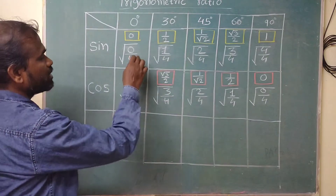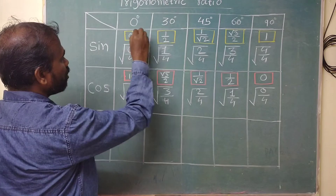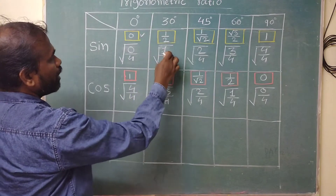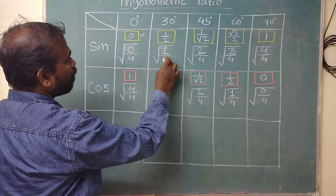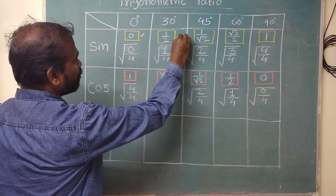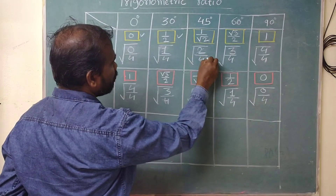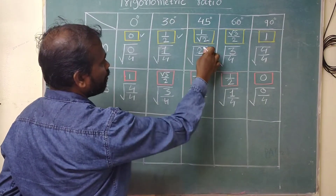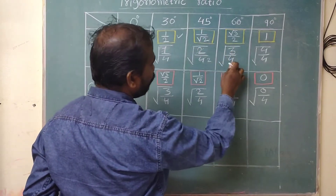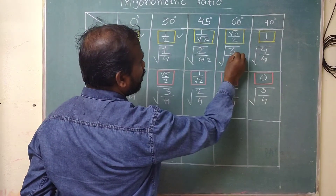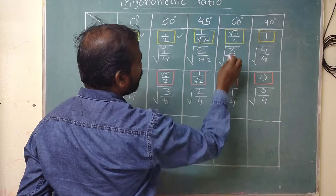Now let's see the root values. Root of 0/4 is 0. Root of 1/4: root of 1 is 1, so it gives 1/2. Root of 2/4: since 2/4 = 1/2, taking the root gives 1/√2. Root of 3/4: taking the root gives √3/2.